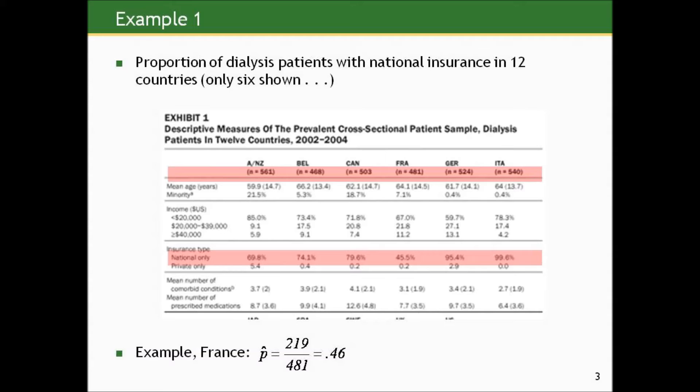So our sample proportion, our best guess for the proportion of dialysis patients in France who have national insurance is 219 divided by 481, or 46%.